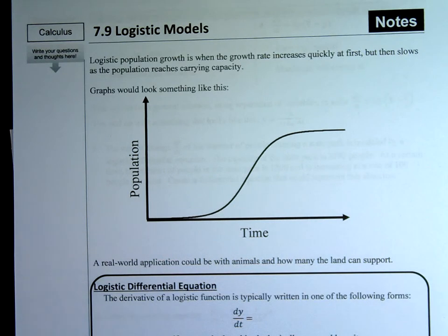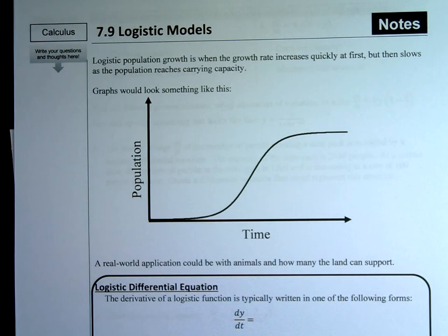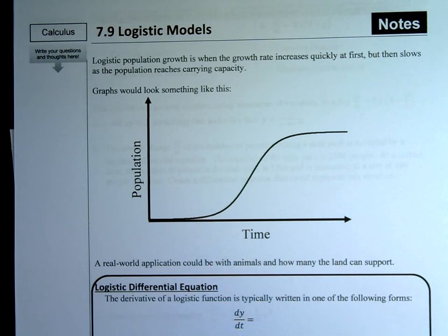All right, my BC kids. This is section 7-9 on logistic models, and it has a lot to do with populations and population growth — they seem to be the most applicable things involving logistic models. Logistic population growth is when the growth rate increases quickly at first, but then slows as the population reaches the carrying capacity.